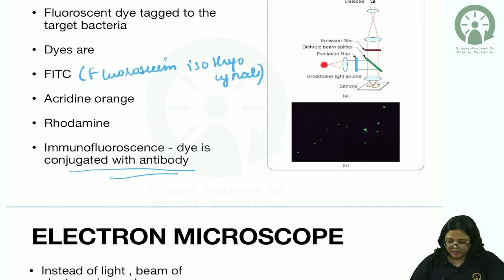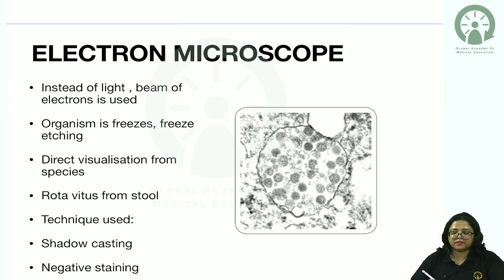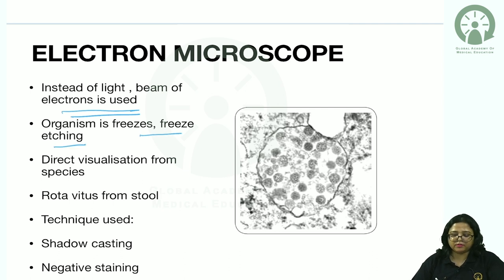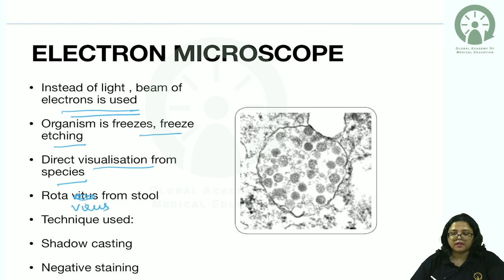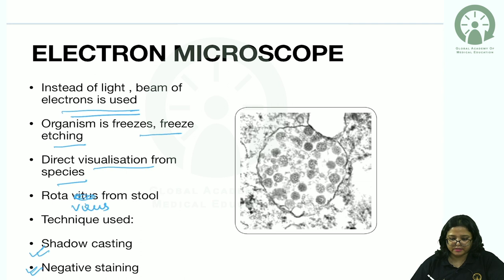In electron microscopy, instead of light a beam of electrons is used. The organism is freeze-etched. It is used to directly visualize viruses — for example, rotavirus from stool shows a spoke-wheel pattern. Techniques used in electron microscopy include shadow casting, negative staining, and freeze etching.